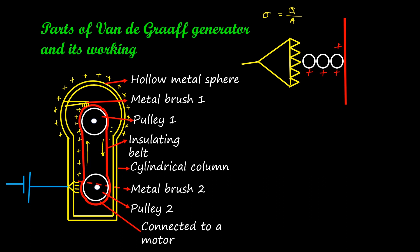All the positive charges have been transferred to the sphere, so the belt comes down with negative charge. As the pulley rotates, the belt further loses electrons and becomes positive again. This process continues until a large number of charges is transferred to the surface of the sphere. As the charges increase on the surface, the potential also increases, raised up to several million volts — such high voltage is required for the Van de Graaff generator to perform its intended functions.